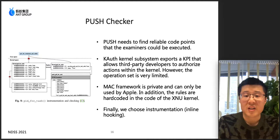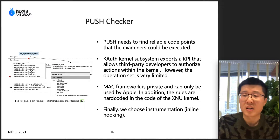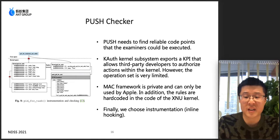In order to hook target system calls, PUSH needs to find reliable code paths where examiners can be executed. Unfortunately, the Kauth and MAC system in the XNU kernel cannot be used by our system. The reason is that the Kauth operation set is very limited and the MAC framework is private and can only be used by Apple. To solve these issues, we propose PUSH checker, a kernel extension which dynamically deploys PUSH policy rules through code instrumentation techniques.